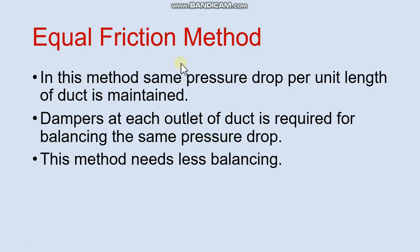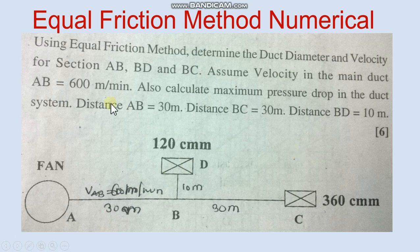Equal friction method. In this pressure drop per unit length of duct is maintained same. So dampers at each outlet of duct is required for balancing the same pressure drop. We will see one example on this.